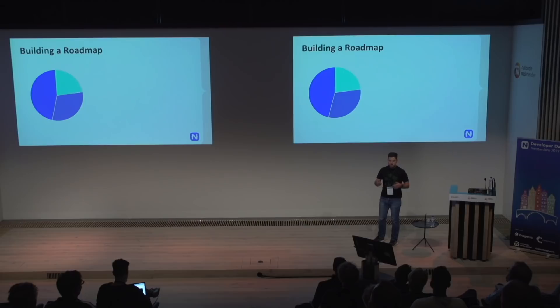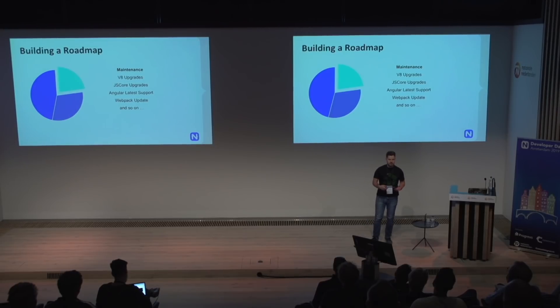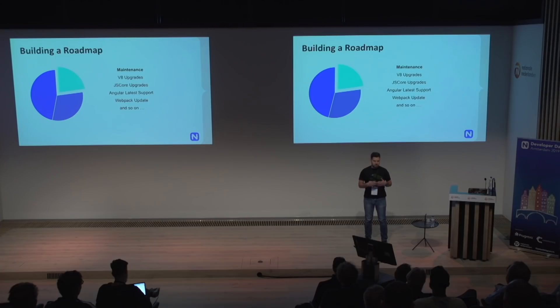You can think of our roadmap as consisting of three types of work, or three buckets. The first bucket, let's call it the maintenance one. The work there generally comes from the team and includes things like the V8 upgrade, the JS core upgrade, support for the latest bits of Angular, and similar work. This is really important because we want NativeScript to run on the latest bits of its technology stack, which brings a lot of improvements for users and for the team as maintainers.